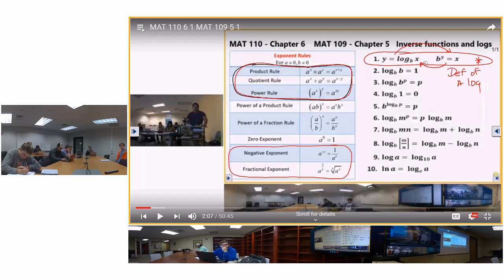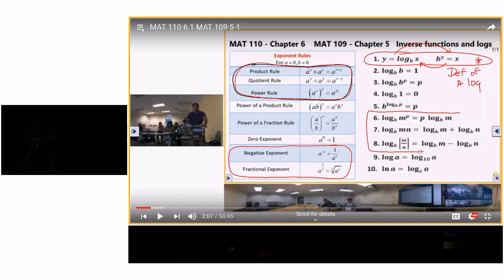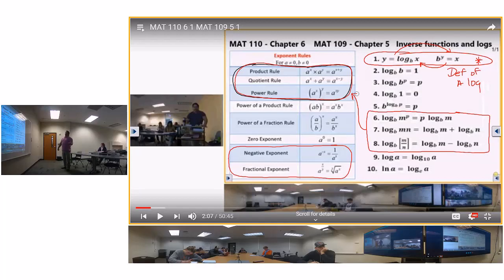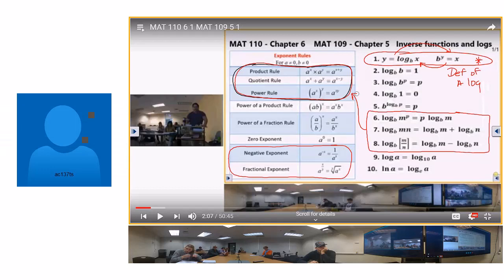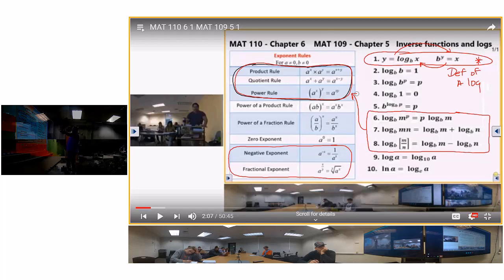Here are the three properties that coincide with those three properties. The first one is called the power rule. The second one is called the product rule. The third one is called the quotient rule. Now, what I want you to do for homework, I want you to review those over there for the exponent, and I want you to start learning these, or make sure.